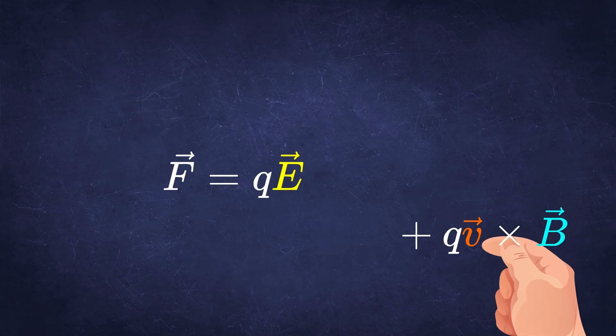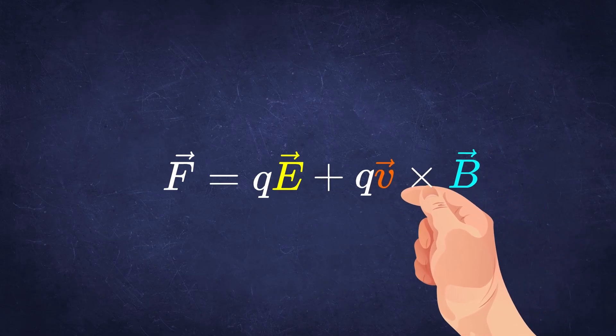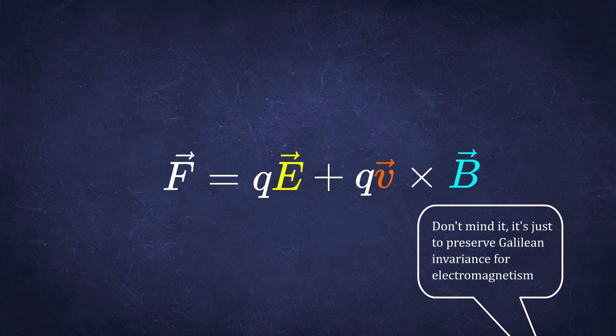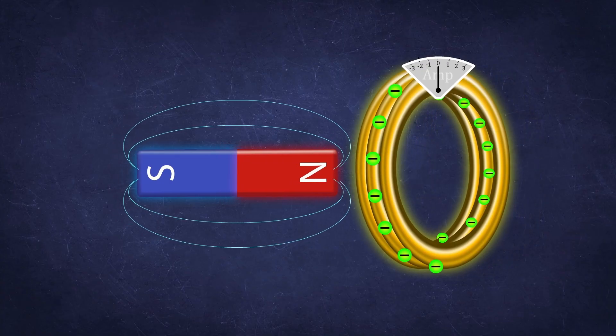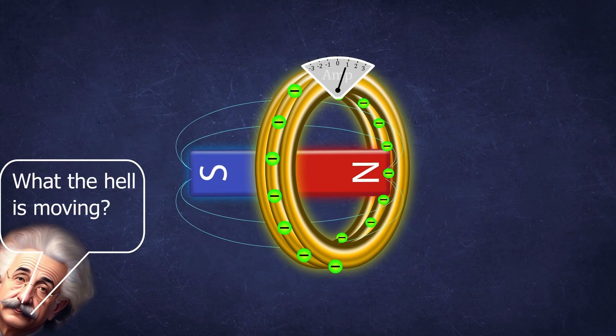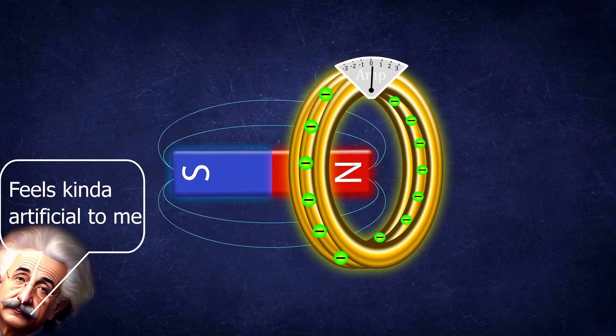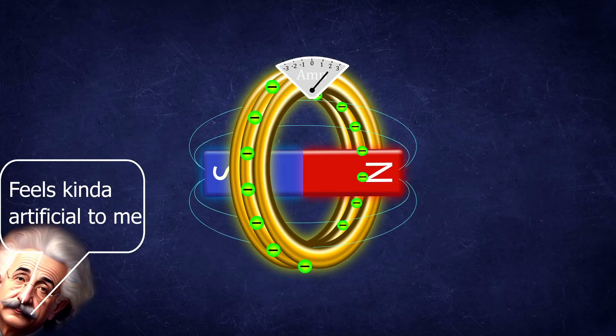And by some miracle it always creates the same current in the coil. It almost feels like someone put this magnetic term in the equation by hand, so that you are not able to distinguish what is really moving, making the current in the coil dependent only on the relative motion between these two bodies—as if somebody wanted to preserve the Galilean relativity also in electromagnetism. And this was what boggled Einstein's mind the most about electromagnetism, and this is what he had to say about this problem.